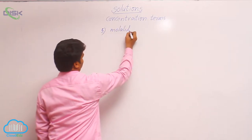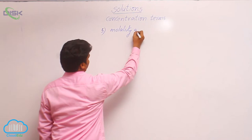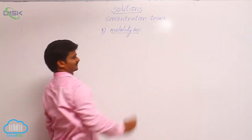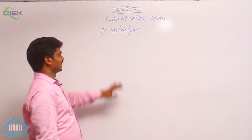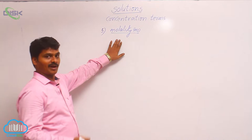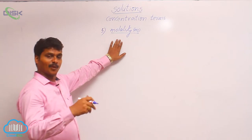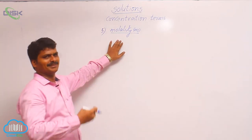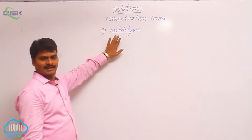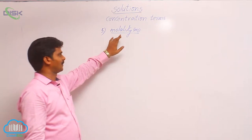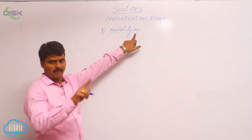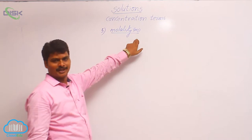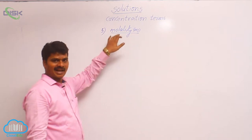Molality — what is this? See the difference between molarity and molality. There are two words; they appear similar. But in molarity, we use the capital M. Capital M denotes molarity. Small m denotes molality.